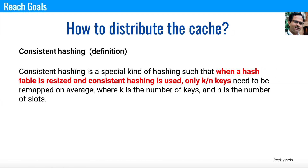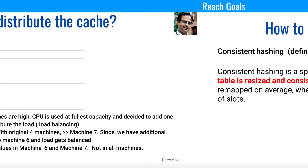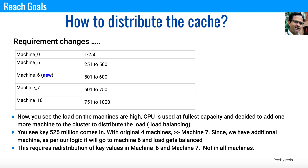Here is a definition of consistent hashing. As highlighted in red: when a hash table is resized and consistent hashing is used, only k/n keys need to be remapped on average, where k is the number of keys and n is the number of slots. That is exactly what we did in the previous screen — when Machine 6 was added, the change happened only in Machine 6 and Machine 7, not across all the machines.